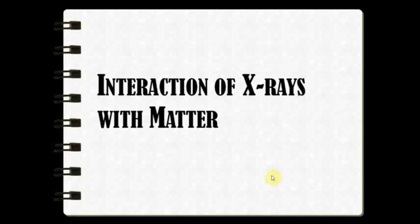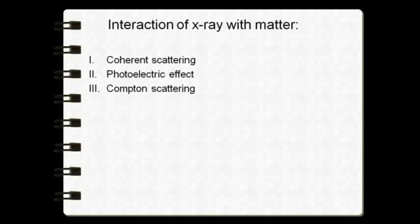Good day to all, welcome to another session. Today's topic is about the interaction of x-rays with matter — it's a continuation of the previous session on parts of an x-ray machine. There are four kinds of interactions occurring when x-rays interact with the human body. First, some primary photons just pass across the human body and reach the sensor without any interaction, comprising around 9 percent.